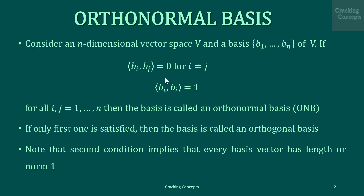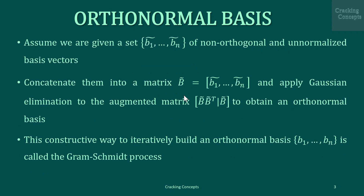If only the first condition is satisfied then the basis is called an orthogonal basis. Note that the second condition implies that every basis vector has length or norm of 1.